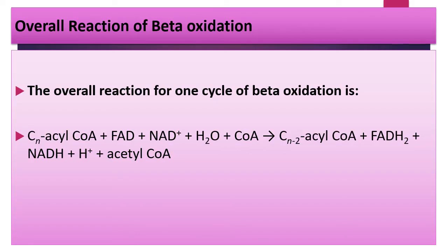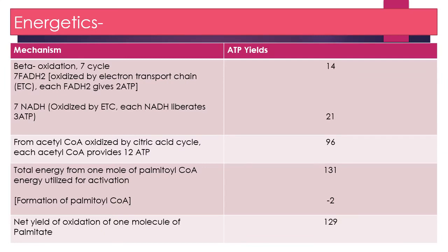This is the overall reaction of beta oxidation. Beta oxidation of palmitic acid is repeated for 7 cycles, producing 8 molecules of acetyl-CoA. Seven cycles give 7 molecules of FADH2, each giving 2 molecules of ATP, so 7 FADH2 gives 14 molecules of ATP. Seven molecules of NADH give 21 molecules of ATP. From acetyl-CoA oxidized by the citric acid cycle, each acetyl-CoA provides 12 ATPs, so 8 molecules of acetyl-CoA gives 96 molecules of ATP. Total energy from 1 molecule of palmitoyl-CoA is 131 molecules of ATP; subtracting 2 molecules utilized in activation, the net yield of oxidation of 1 molecule of palmitate is 129 molecules of ATP.